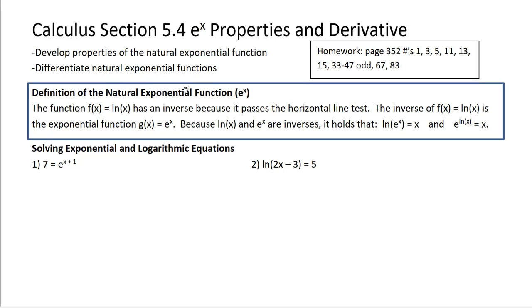Natural log exponential function. The function f(x) = ln(x) has an inverse because it passes the horizontal line test we talked about in the last couple sections. The inverse of f(x) = ln(x) is e to the x. Because they're inverses, it holds that if I took f(g(x)) and g(f(x)), I both get x, which is true, so they both hold.